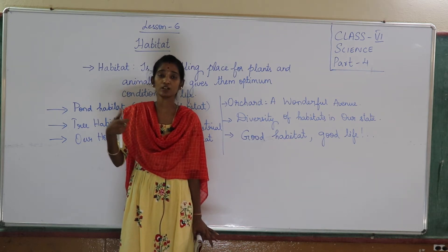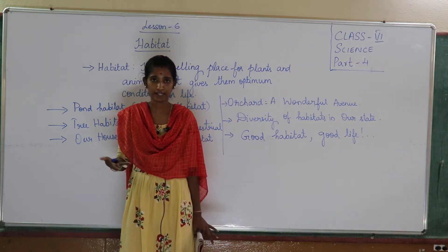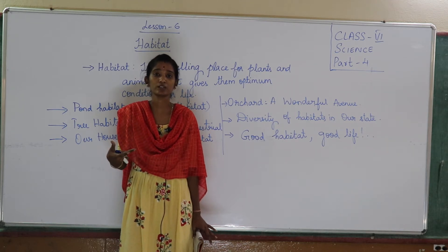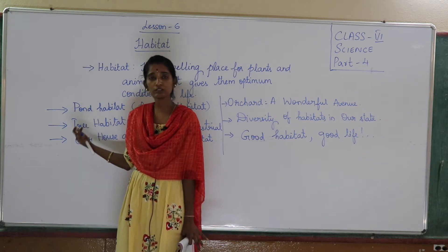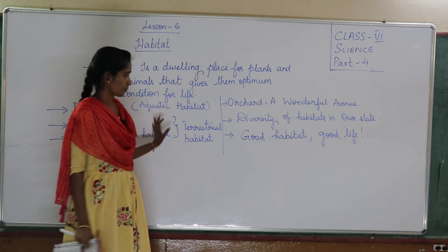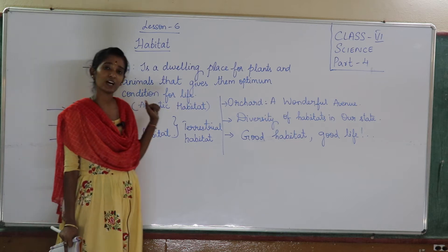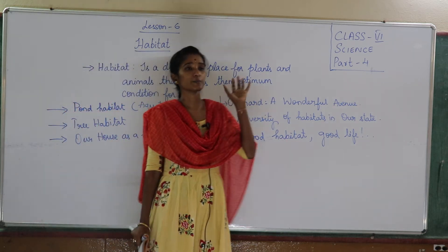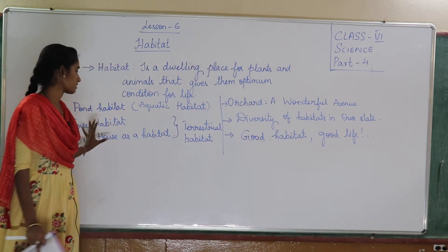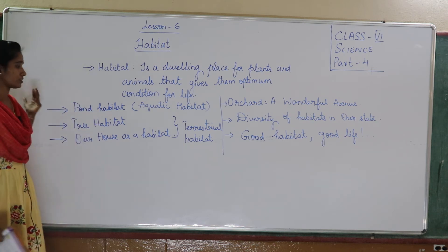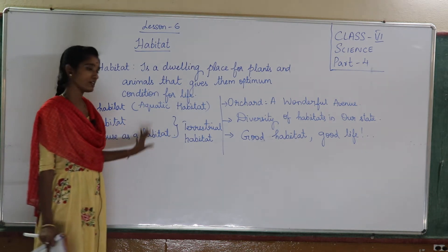We can understand the problem of a living being — that is an animal or plant. Even they are a living being, they are not a non-living being. So we should understand how a particular animal is having a house on the tree. Now, what do you mean by terrestrial habitat? Terrestrial habitat is a plant or an animal which is living on the ground, whether it is on the tree or whether it is on the land — anything living on land is called terrestrial habitat.